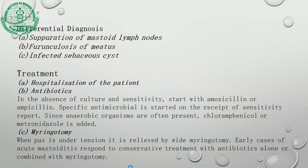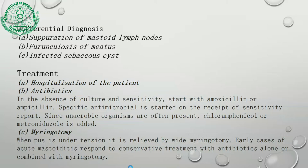Treatment: hospitalize the patient. Start antibiotics after culture and sensitivity — mostly amoxicillin, ampicillin, or augmentin. Since anaerobes can often be present, chloramphenicol or metronidazole can be added. Myringotomy provides ventilation and is reviewed with wide myringotomy. Early cases of acute mastoiditis respond to conservative treatment with antibiotics alone combined with myringotomy — an incision on the tympanic membrane to relieve the pressure. The posterior reservoir sign: whenever we mop the ear discharge, it comes out every time.